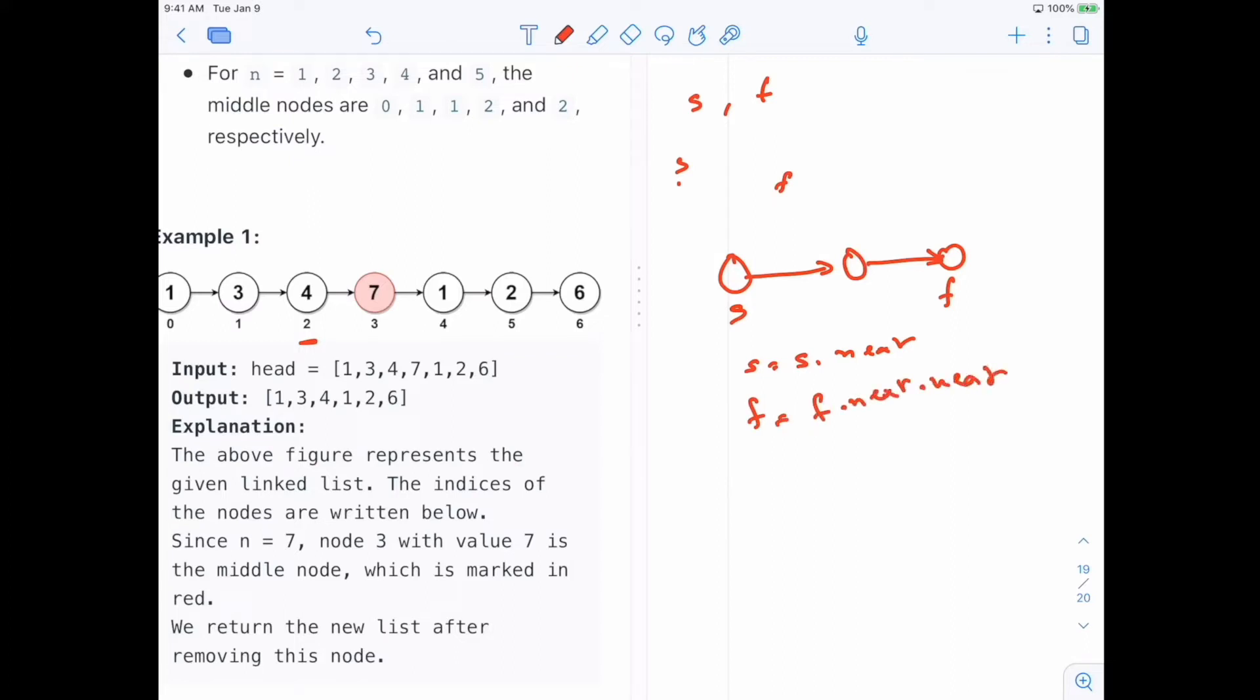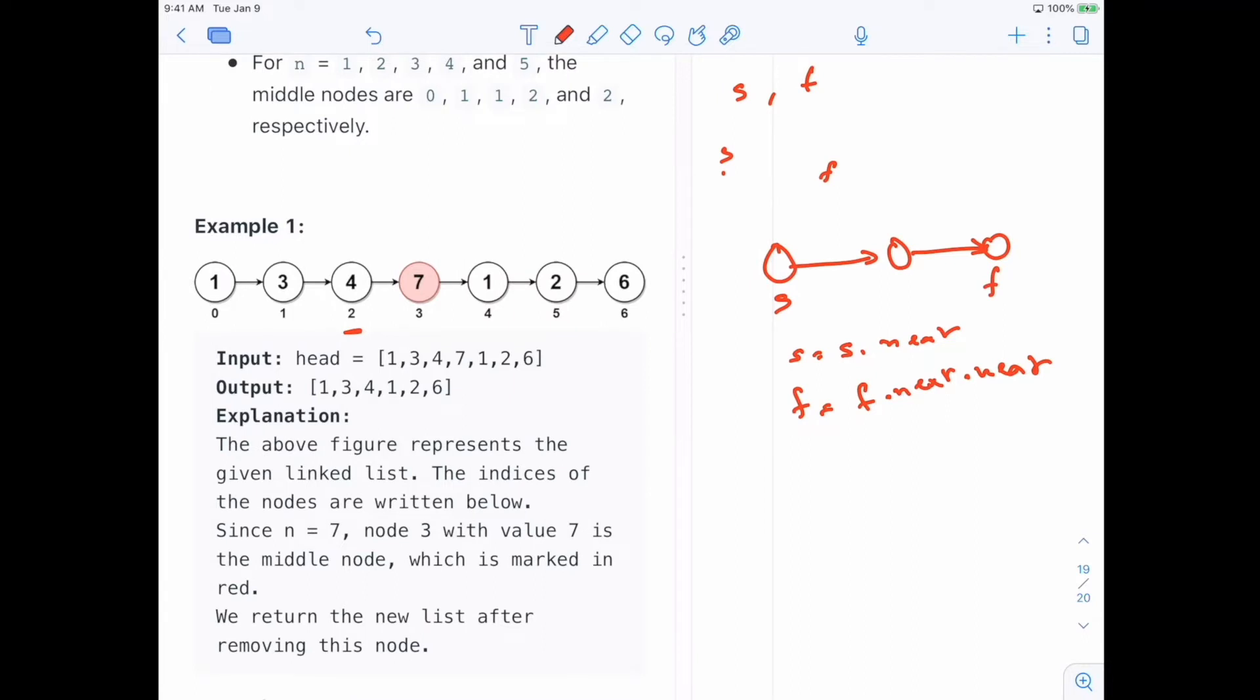And you can see here, since fast will move every time twice, you will sort of increase the distance. When f reaches the end, s will be in the middle, because it's n divided by 2, and that's exactly what you are doing here every time you are doubling. So when this one reaches the end, s would be in the middle or just before the middle.